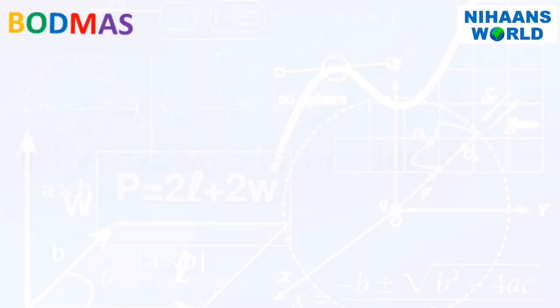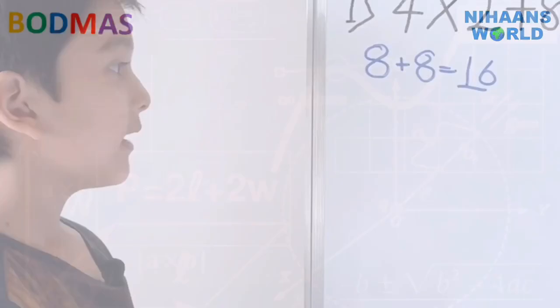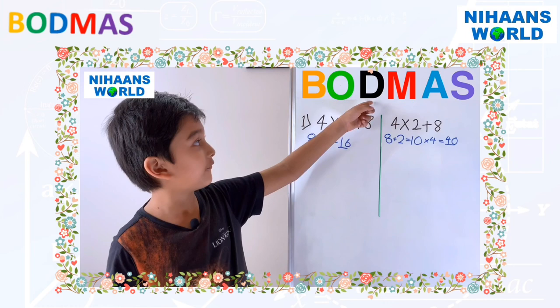Real answer will be 16. Why BODMAS is needed? Friends, as we have seen in the previous example, for the same problem we got different answers. We do not know which answer is correct. This means we need to have some rules to tell us the order in which we should do the operations.